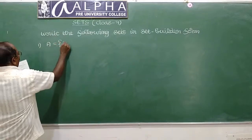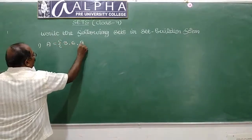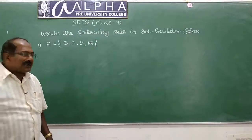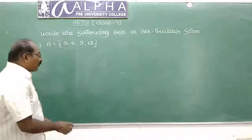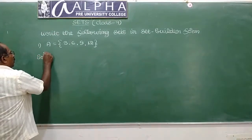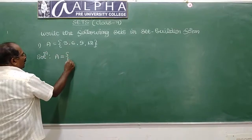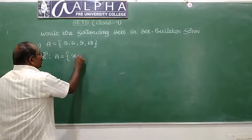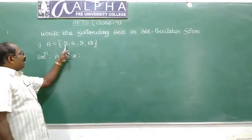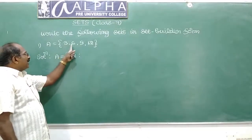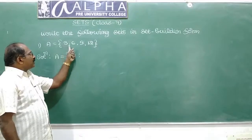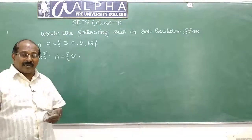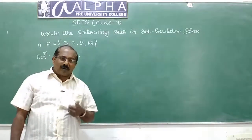Set A is equal to {3, 6, 9, 12}. The given set in set-builder form will be written as: set of all x such that... We have to observe the elements: 3, 6, 9, 12. These are the first four positive multiples of 3.